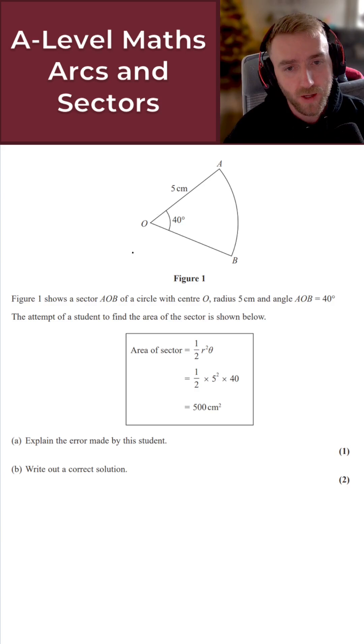Now, what we've got for this question here is figure one, which shows a sector of a circle. And then we've also got this box, which shows the attempt of a student to find the area of the sector that's presented above. So for the first part of this question, all we want to do is just explain the error made by the student.